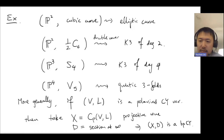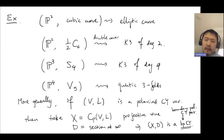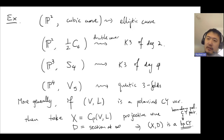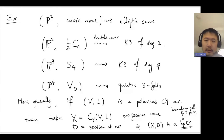We use BPCY as shorthand for boundary polarized Calabi-Yau pairs. Therefore, studying the moduli of polarized Calabi-Yau varieties is not so far from studying boundary polarized Calabi-Yau pairs, because every polarized Calabi-Yau variety has this natural projective cone construction, which is a Fano variety, and the section at infinity is the anti-canonical divisor.